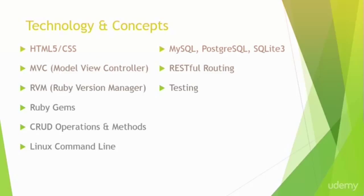So the technology and concepts in this course: we have HTML5 and CSS, again model view controller, RVM — which stands for Ruby Version Manager — that's what we're going to use to install Ruby. And Ruby gems. Gems are a huge part of Rails; basically they're little programs or extensions or modules, whatever you want to call them, and they're very helpful.